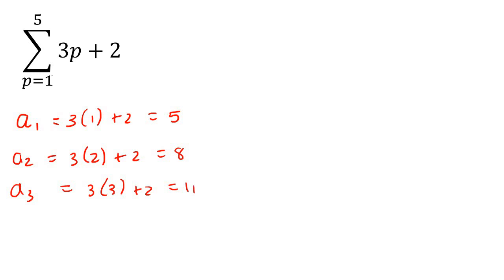Now you keep going until this number reaches this number. So that's going to be up to five. So three times four add two, which is 14, and then three times five add two, which is 17.